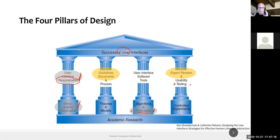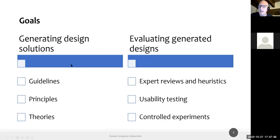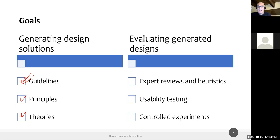These guidelines will also serve as the basis for reviewing interfaces — first used in a generative way while creating, then the same or similar criteria can be used for evaluating results. The topic is generating and evaluating design solutions. The three categories are theories, principles, and guidelines. Guidelines will be the most critical and practical ones. The evaluation use of these guidelines will be covered in the next chapter.